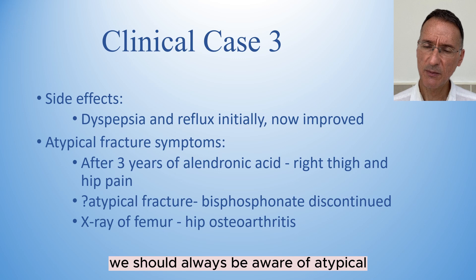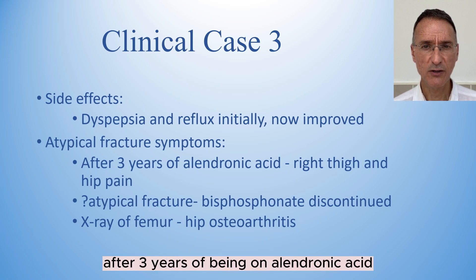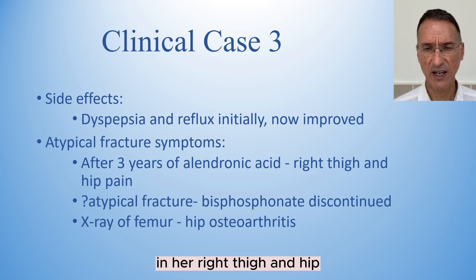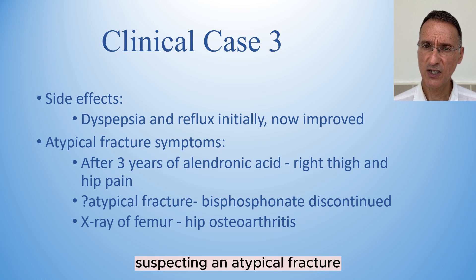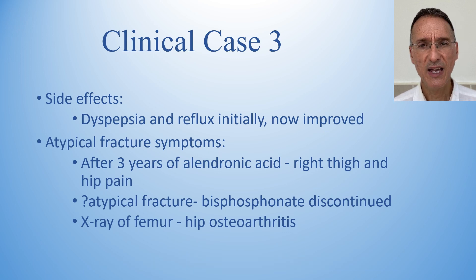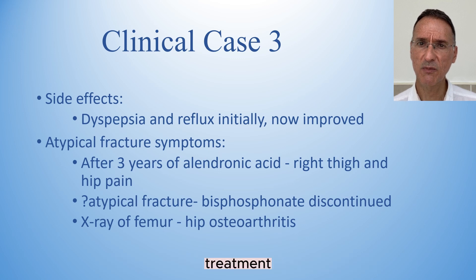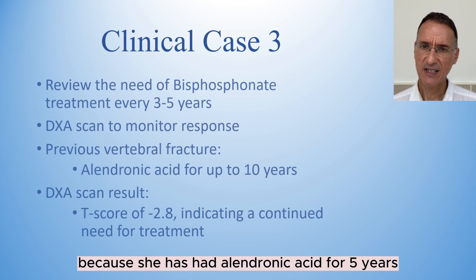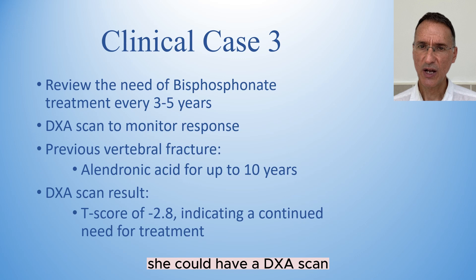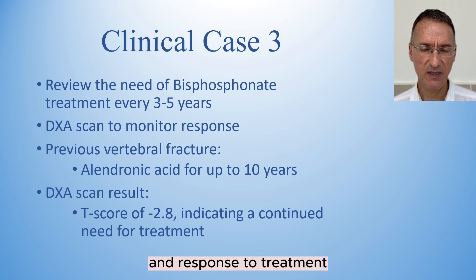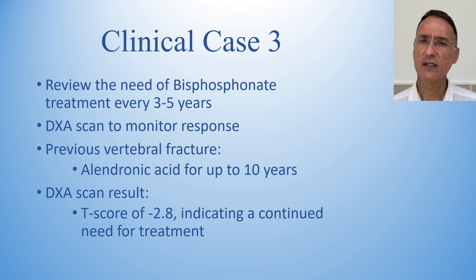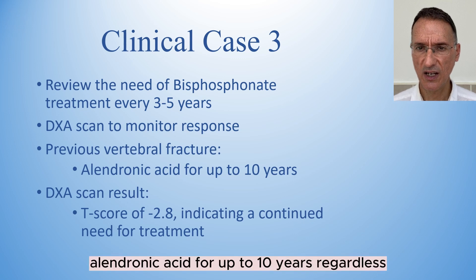We should always be aware of atypical fracture symptoms. After 3 years of being on alendronic acid, Sarah started experiencing new onset pain in her right thigh and hip. Suspecting an atypical fracture, she was advised to discontinue the medication and an x-ray of the femur was arranged. A diagnosis of hip osteoarthritis was made and bisphosphonate treatment was restarted. Because she has had alendronic acid for 5 years, we should review the need to continue. However, because Sarah had a previous vertebral fracture, she should be advised to continue alendronic acid for up to 10 years regardless.